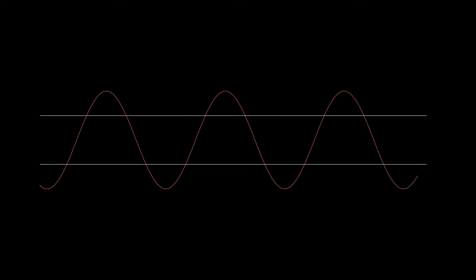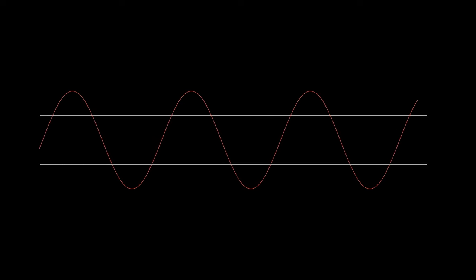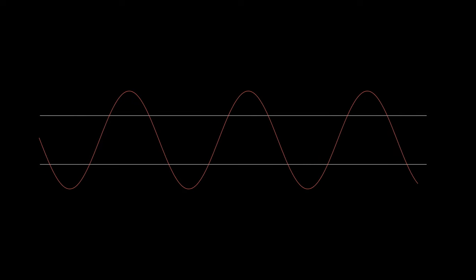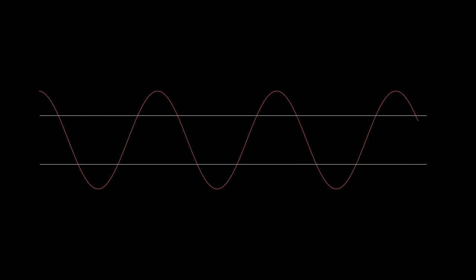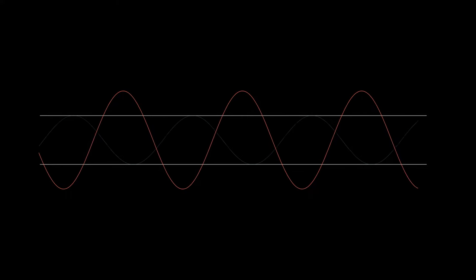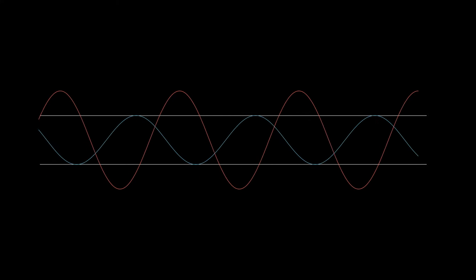In transmission lines, if the line is terminated with a load equal to the characteristic impedance, then the incident signal is fully dissipated in the load. If the load impedance is different than the characteristic impedance, part of the signal is dissipated in the load and the other part is reflected back.